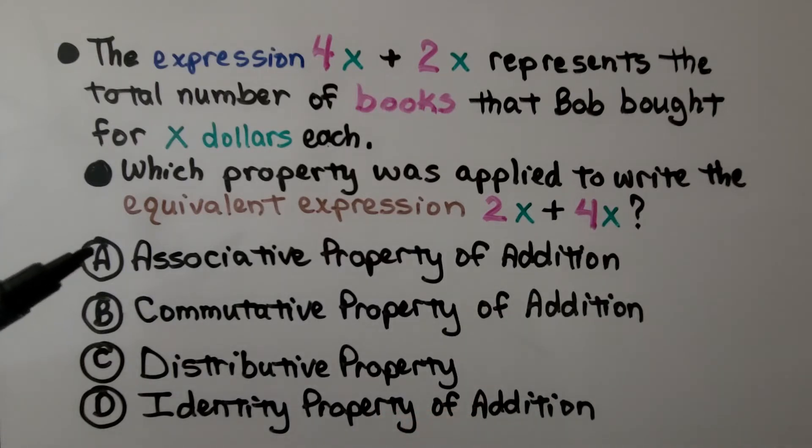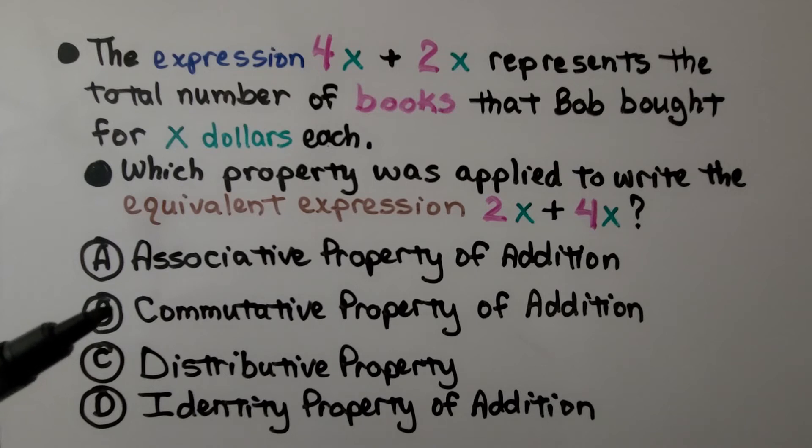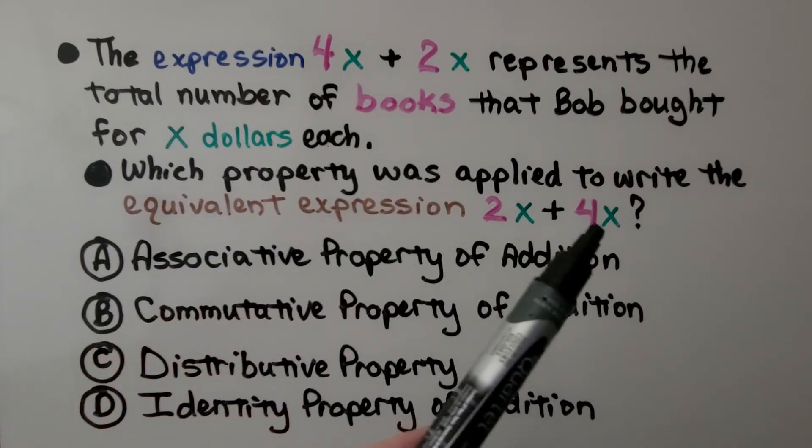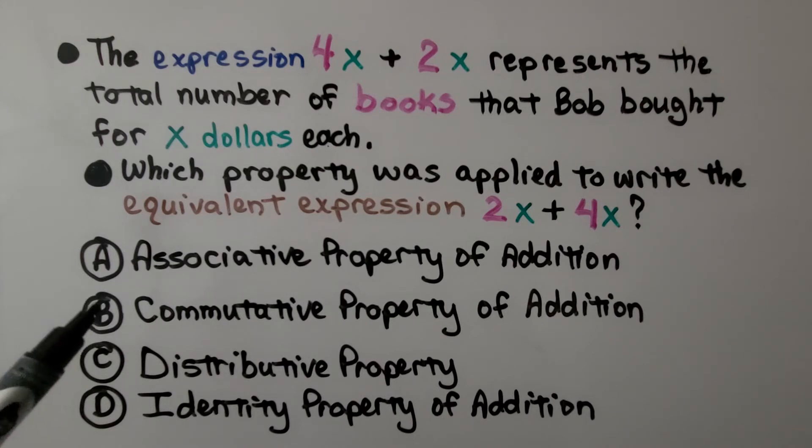We have the associative property of addition. Well, that's the grouping one with parentheses. So it's not that one. The commutative property of addition. Well, the commutative property says that we can add in any order. We have 4x plus 2x, then we have 2x plus 4x. It might be this one. Let's look at the other ones.